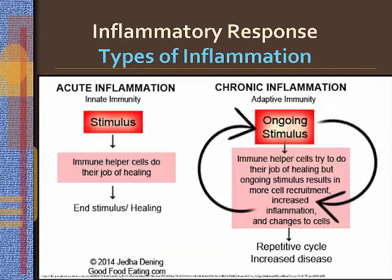Acute inflammation heals in 2 to 3 weeks, usually leaving no residual damage, with neutrophils as the predominant cell type at the site of inflammation. Subacute inflammation has some features of acute inflammation but persists longer — for example, infective endocarditis, which persists for weeks or months. Chronic inflammation can last for years. The predominant cell types involved are lymphocytes and macrophages, and it may result from changes in the immune system such as an autoimmune disease.